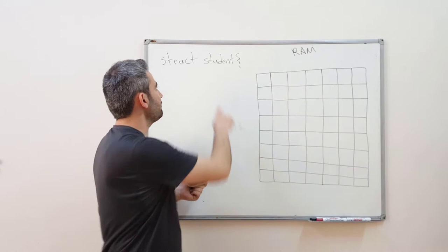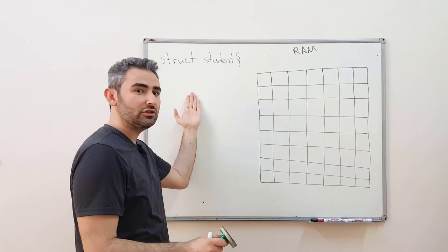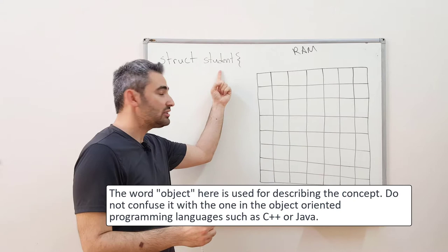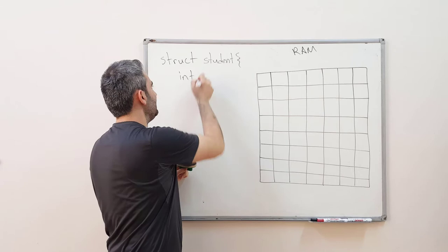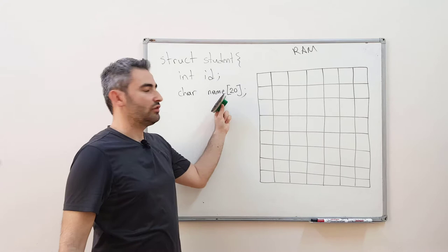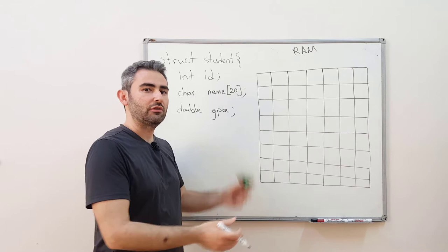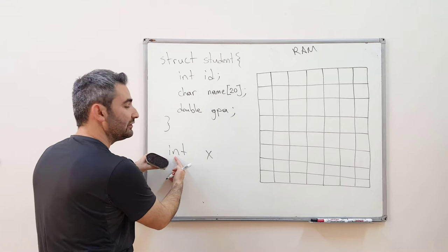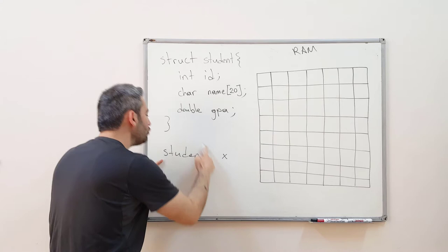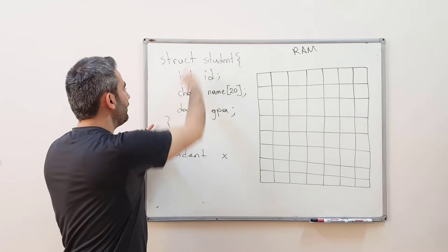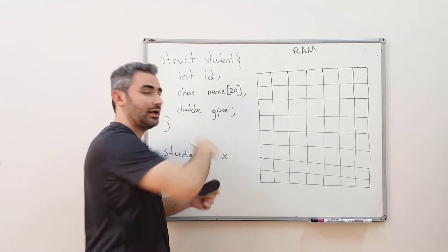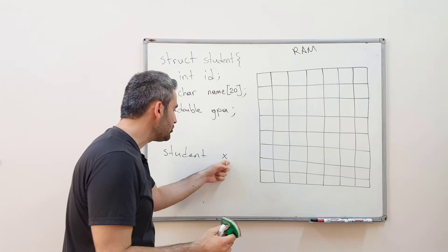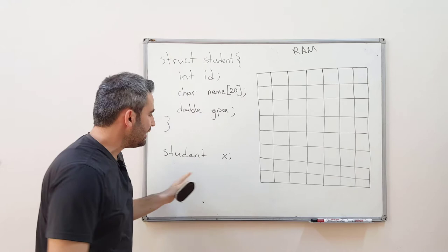Let's say we have a student structure. This is like a blueprint — we define some features here using primitive data types, and every object created using this structure will have the same features. This structure has an integer variable for the student's id, a char array for the student's name, and a double variable for the student's GPA. Just like you create x from data type integer, you can create x using your own defined data type. You define your structure first, then create objects from that data type.